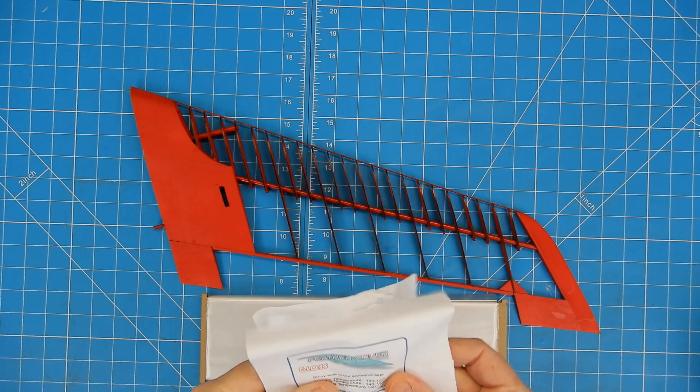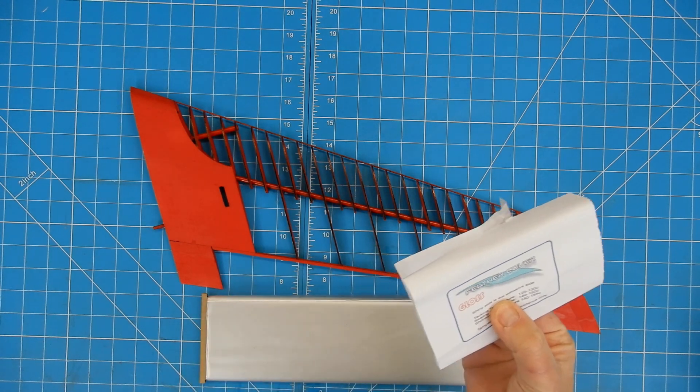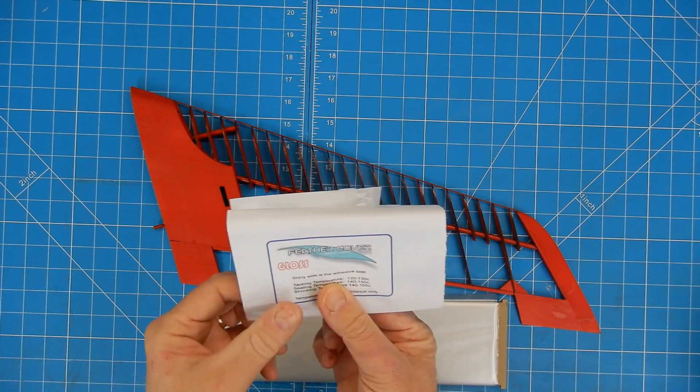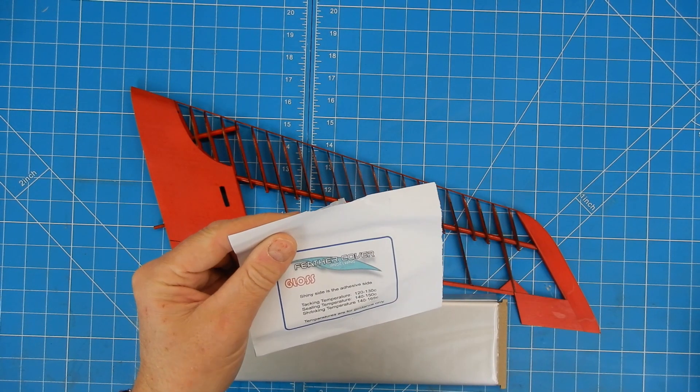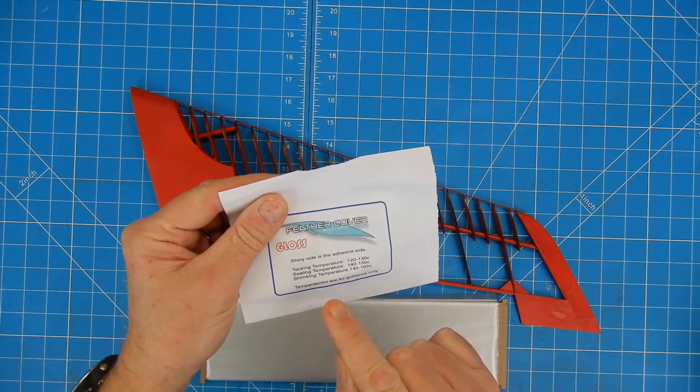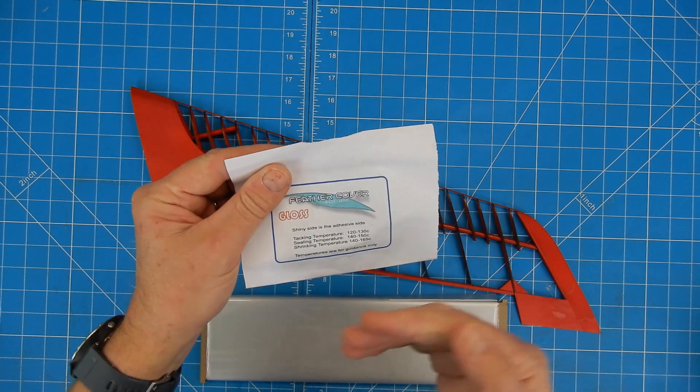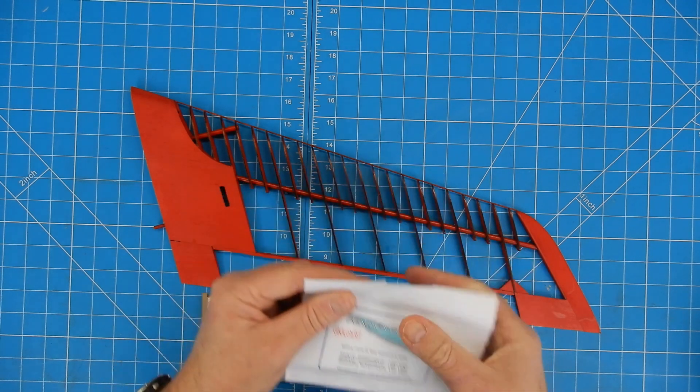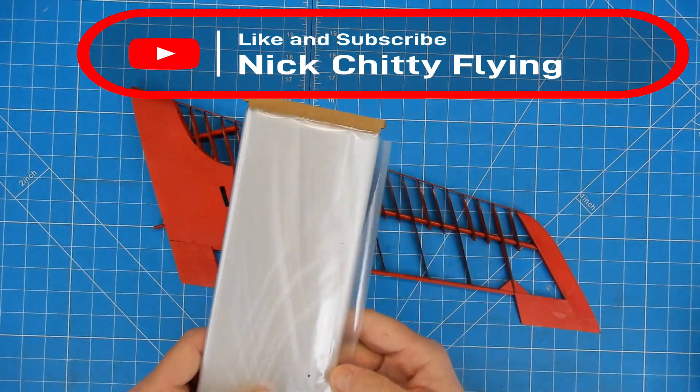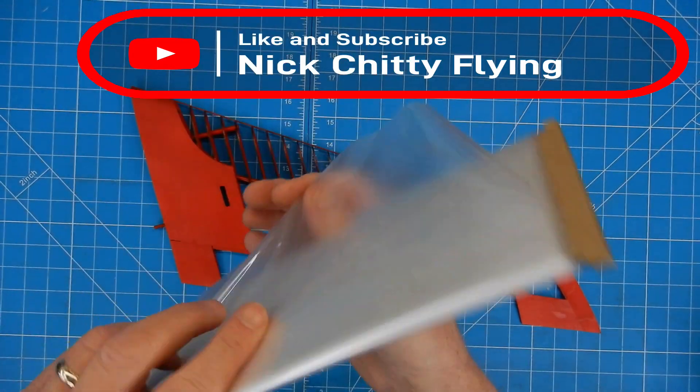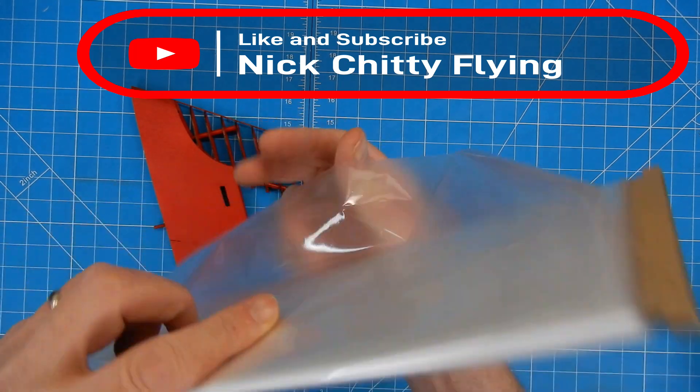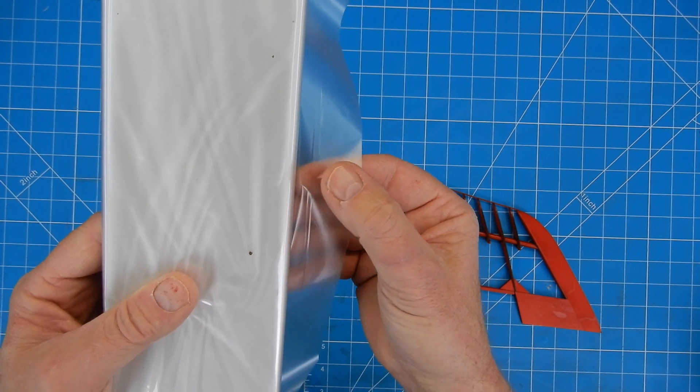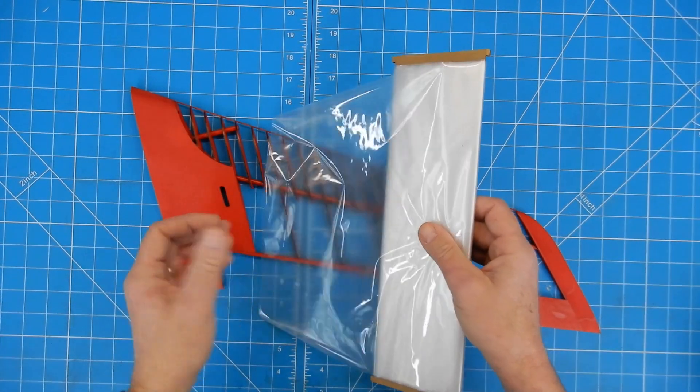Now, at the moment, there is a slight printing error, so it says shiny side is the adhesive side. If you happen to have that pack with the gloss, that is an error I understand from Angel Wing Designs, because that's for the matte surface. So when you've got the matte finish Feather Cover, which you'll have seen on my Sinbad, the shiny side goes down on that. On this, there is a gloss side and a matte side. On this particular product, it's the matte side faces down, and the gloss faces up.